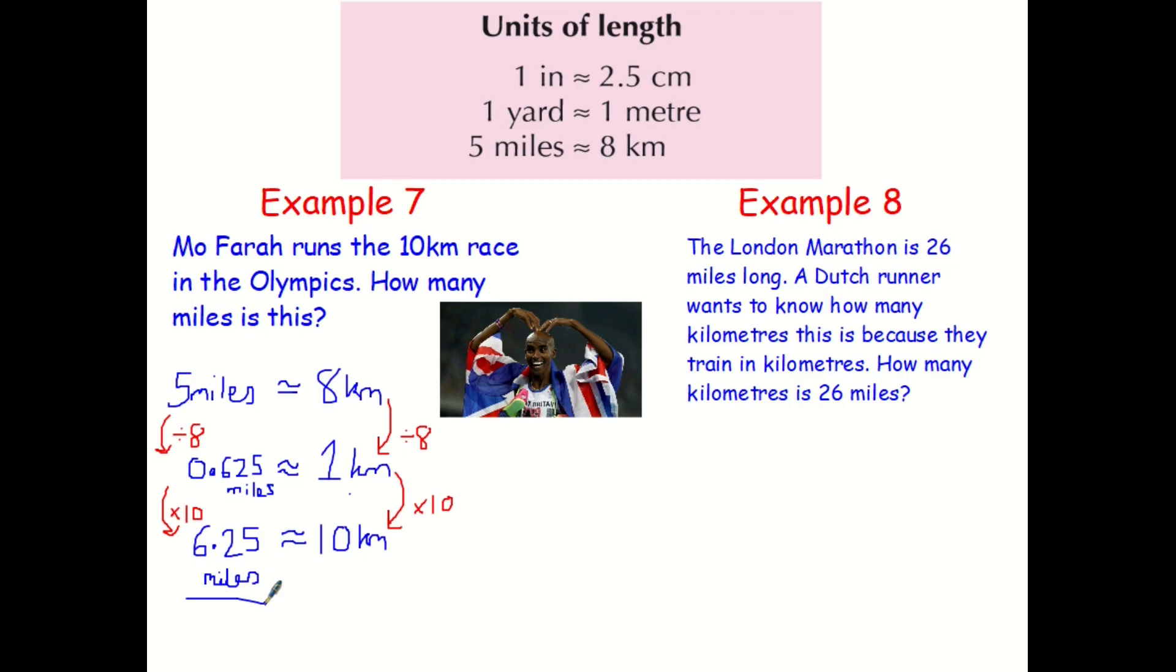And the final example, the London Marathon is 26 miles long. A Dutch runner wants to know how many kilometres this is because they train in kilometres. How many kilometres is 26 miles? Well, again, I'm going to use that really important conversion. Five miles is roughly equal to eight kilometres. But I need to get up to 26 miles. Well, five doesn't go into 26 in a nice way. So I would recommend you go to one mile here.